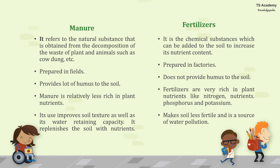What is the difference between manure and fertilizer? Manure refers to a natural substance obtained from the decomposition of waste from plants and animals, such as cow dung. Fertilizers are chemical substances added to the soil to increase its nutrient content. Manure is prepared in the field, whereas fertilizers are prepared in factories. Manure provides humus to the soil, whereas fertilizers do not.